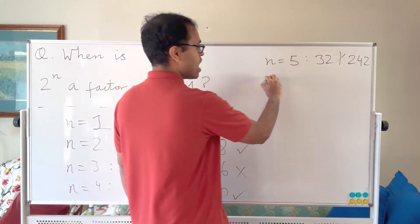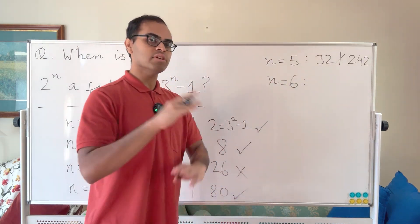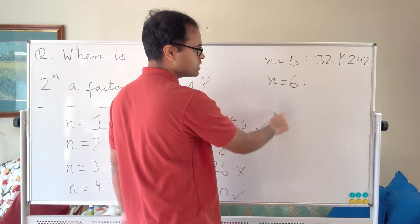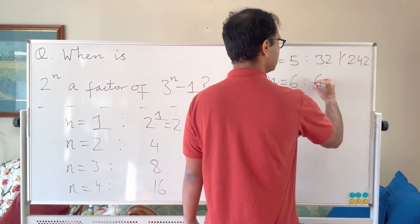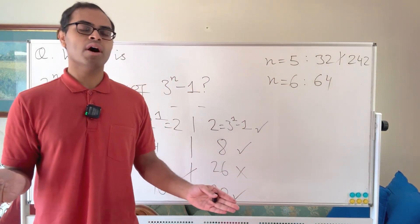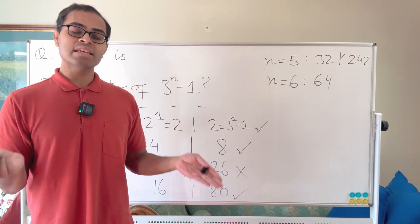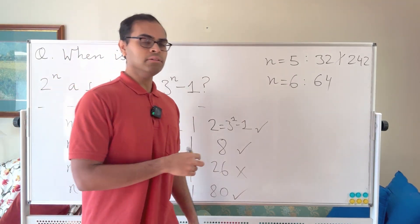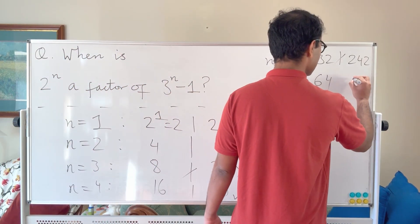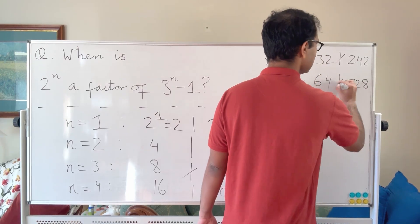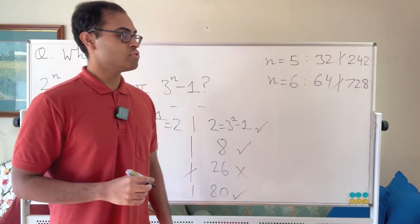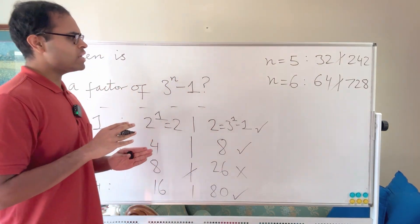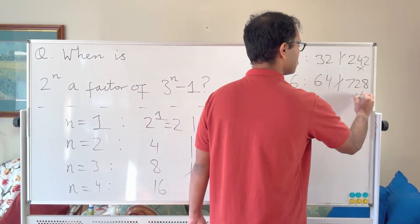It also fails for n equals 6. We get 64 and 3^6 minus 1: 3^5 is 243, times 3 is 729, so 3^6 minus 1 is 728. And 64 does not divide 728. So it fails for both n equals 5 and n equals 6.